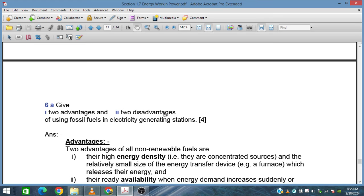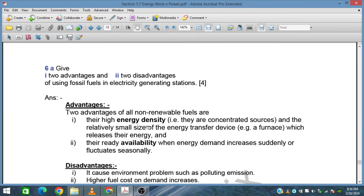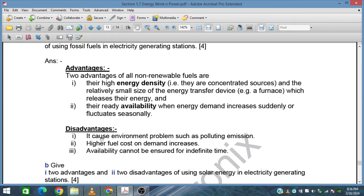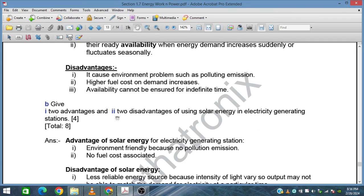Give two advantages and two disadvantages of fossil fuel in electricity generation. Advantages: high density fuel is available in a compact size, and availability is high on demand. Disadvantages: environmental problems with pollution emission, higher fuel costs on high demand making it uneconomical, and availability cannot be ensured for indefinite time because input fuel would always be required.